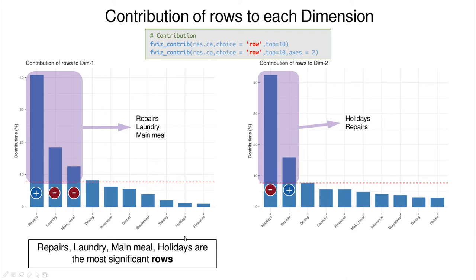So overall, we could say that if we restrict our analysis to repairs, laundry, main meal and holidays, we can have a very broad analysis of what is going on in this data set.